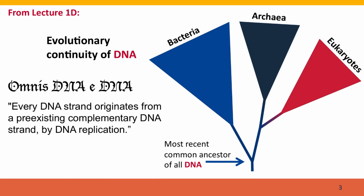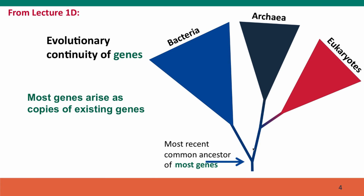You'll remember from Module 1 that we talked about the evolutionary continuity of DNA — how, like cells, every DNA strand originates by replication from existing DNA, so we can trace DNA's ancestry all the way back through the history of life. Well, for most genes, we can do the same thing, at least in principle. Most genes clearly arise as copies of existing genes, and for some genes, they're so well conserved across different groups that we can trace their ancestry back almost all the way to the common ancestor of all living things.